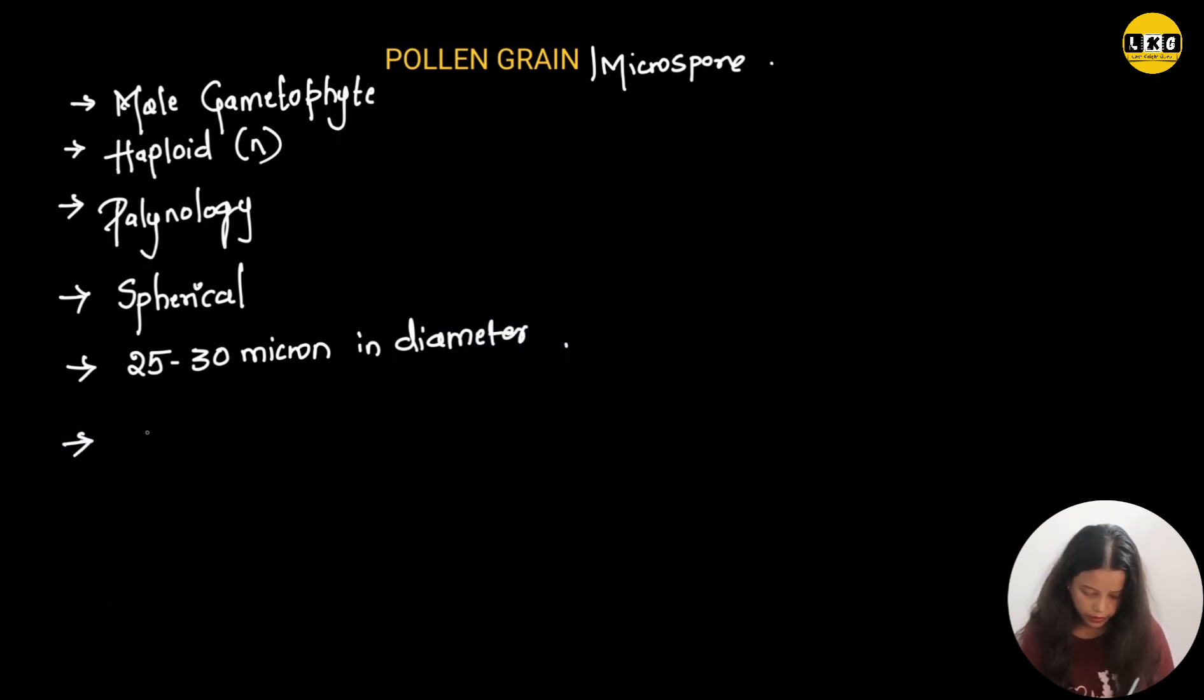Pollen grain is covered by two wall layers. The outer layer is known as exine and the inner layer is known as intine. So both together it is known as sporoderm.